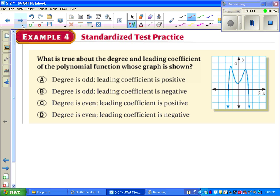So let's take a look at a standardized test practice. It says, what is true about the degree and the leading coefficient of the polynomial? I see both arrows going down. Since both arrows are going down, if I look at that previous chart, that tells me that it must be an even degree with a negative leading coefficient. So now we just look for that. Part A says degree is odd, no. Part B says degree is odd, no. Part C says degree is even, leading coefficient positive, almost. Part D says degree is even, leading coefficient negative. Now we're done.